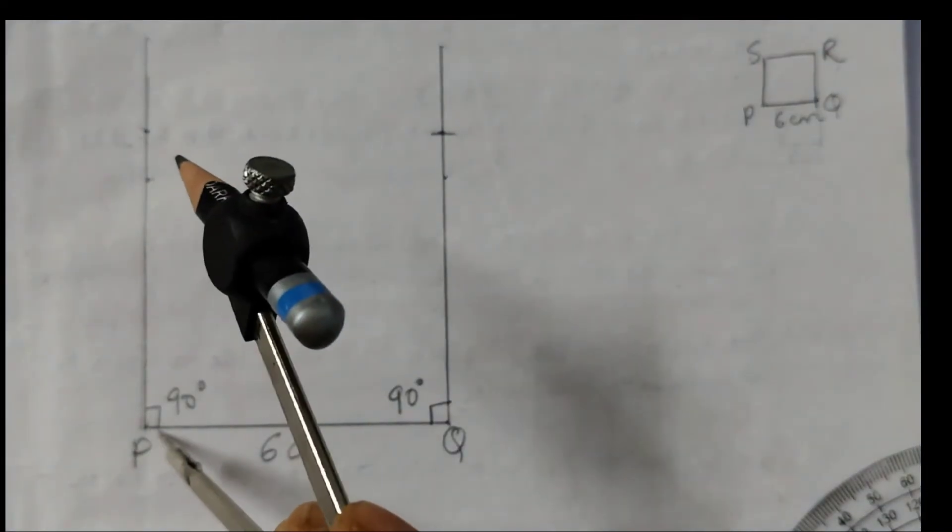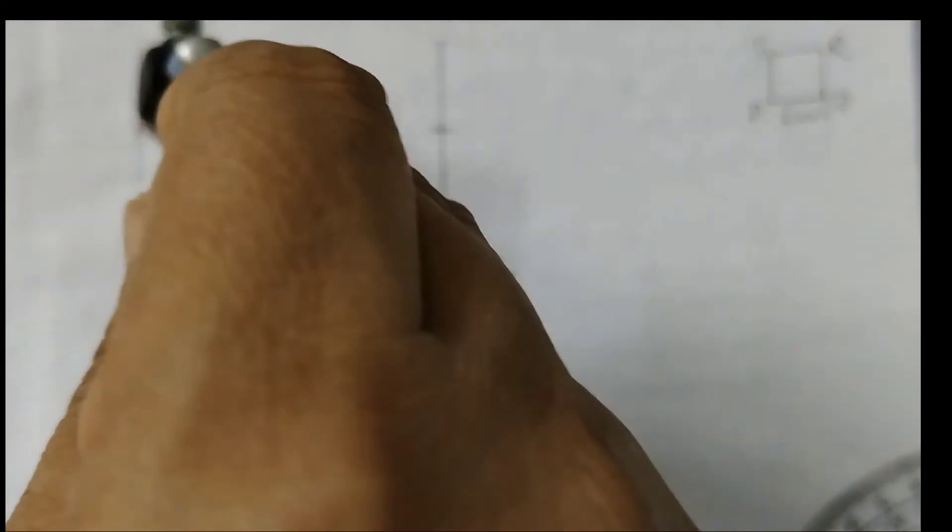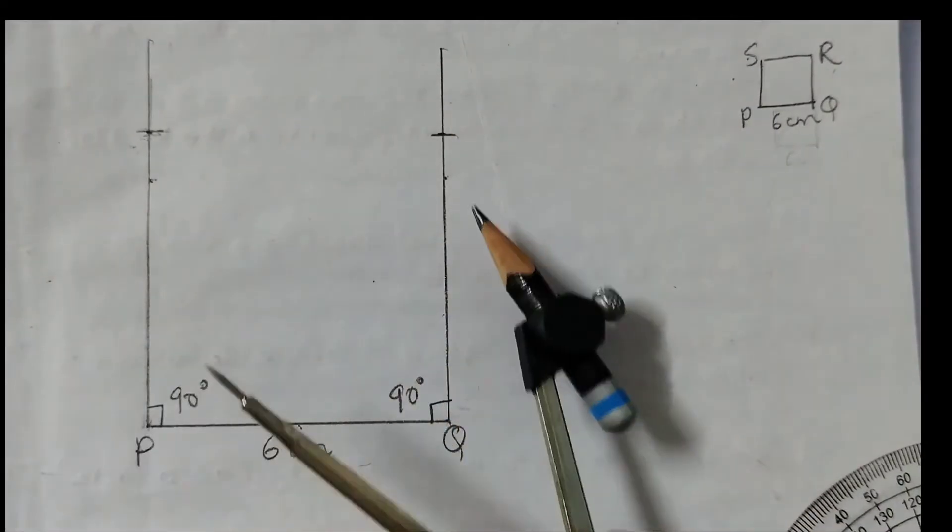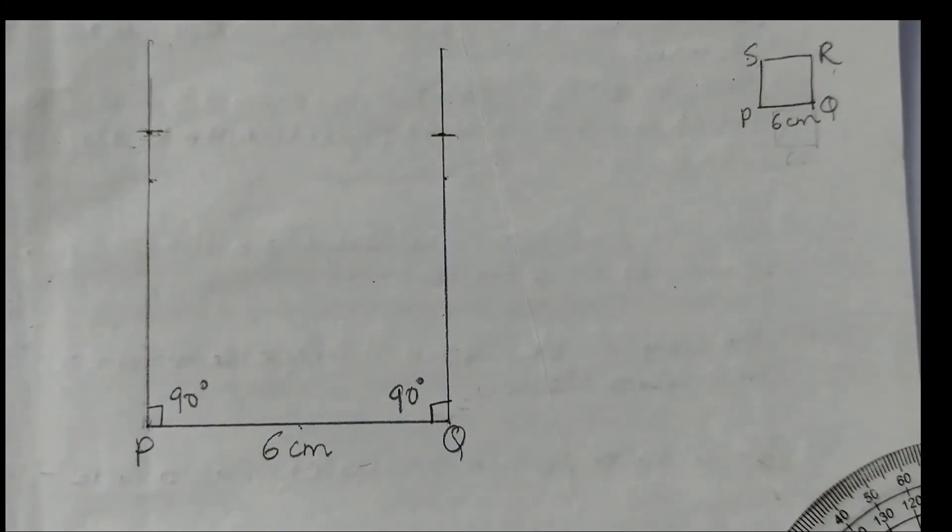Similarly here. See it is the same point. So either you can use a ruler or a compass to mark this 6 cm.